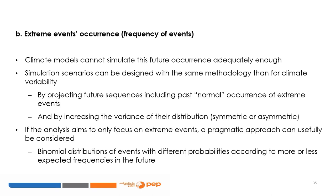The second step for assessing the effects of extreme events using the PEP1T model is to design relevant scenarios for event occurrences. However, as already stressed for climate variability, climate models are not able to simulate the future occurrence of extreme events adequately. Their future frequency over the period of simulation should thus be defined with the same methodology as for climate variability scenarios — by projecting future sequences including past normal occurrences, and by increasing symmetrically or asymmetrically the variance of their distribution. However, if the analysis only aims to focus on extreme events, a more pragmatic approach can also be considered: the occurrence of one event in one year can be modeled with a binomial distribution with different probabilities according to expected changes in the future.